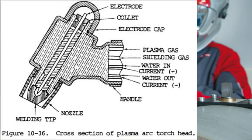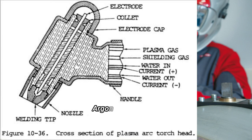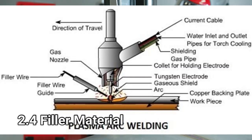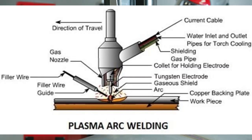Generally, plasma gas is the same as shielding gas, supplied by the same source. Mainly inert gases like argon and helium are used as both plasma and shielding gases, supplied at both the inner and outer nozzles. Mostly no filler material is used in this welding process, but if filler material is used, it is directly fed into the weld zone.